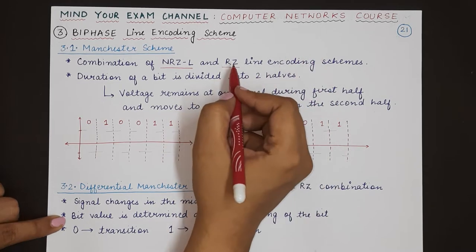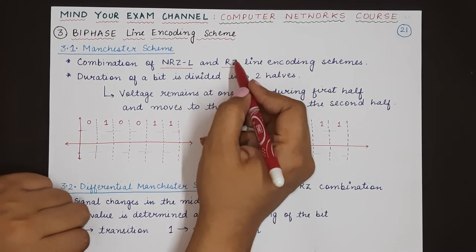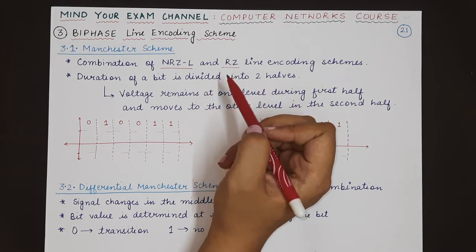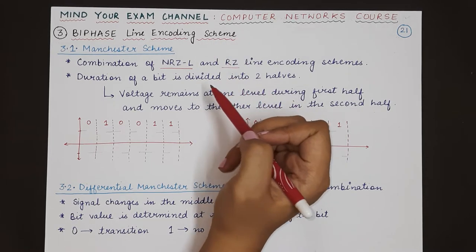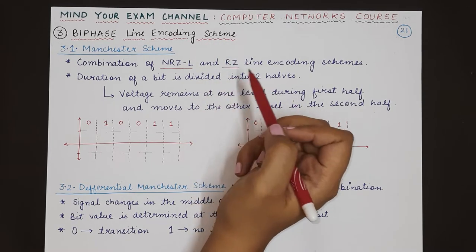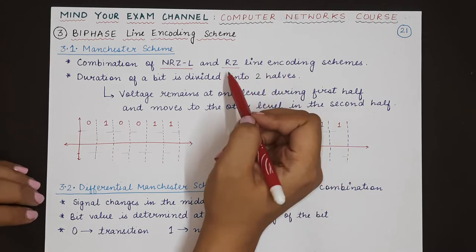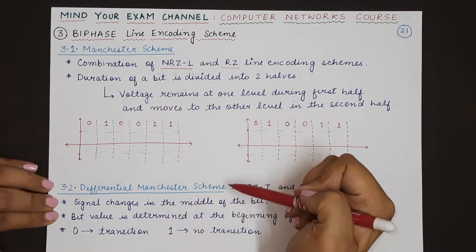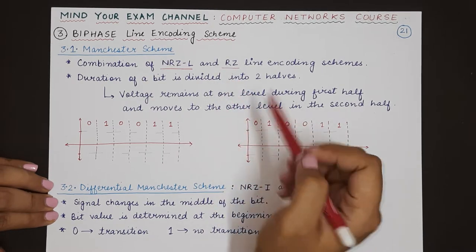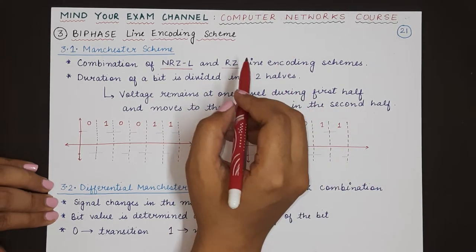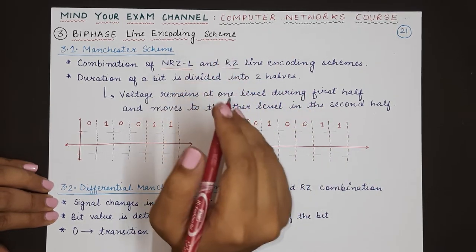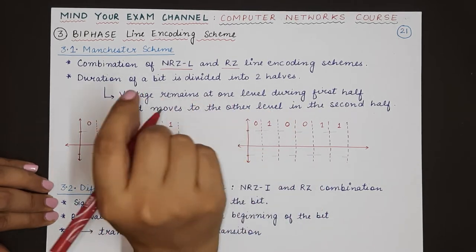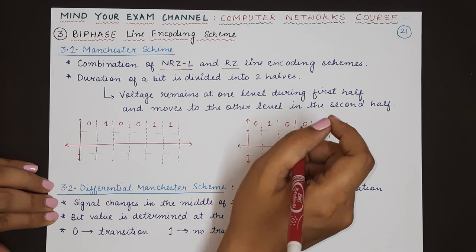In return to zero, the signal returns to zero voltage in the middle of the bit duration. In both Manchester and differential Manchester schemes, the signal will return to a transition point, but it will not remain at zero level.